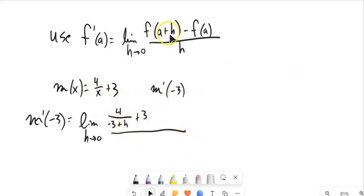Notice that is that part minus the function at A, function at negative 3. So 4 over negative 3, subtracting the whole thing, so I'm going to do some parentheses, plus 3 over H, over the wiggle.